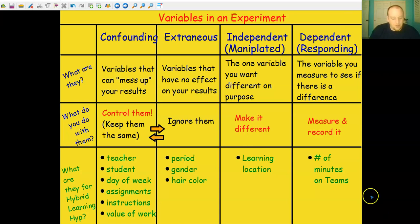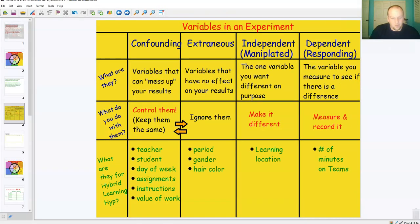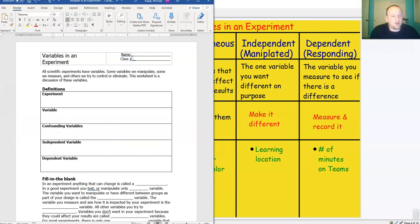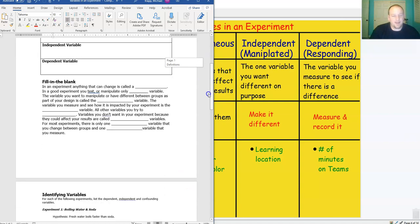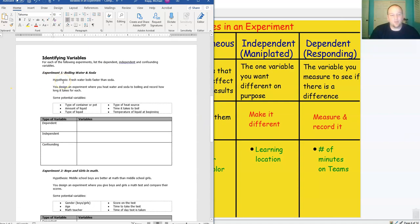The worksheet that you're going to be working on going forward is this one right here. The worksheet that you're going to work on is this variables in an experiment worksheet. It's a pretty simple worksheet where you write out some definitions, then do this fill in the blank section, and then finally identify variables and put them in the right spots.